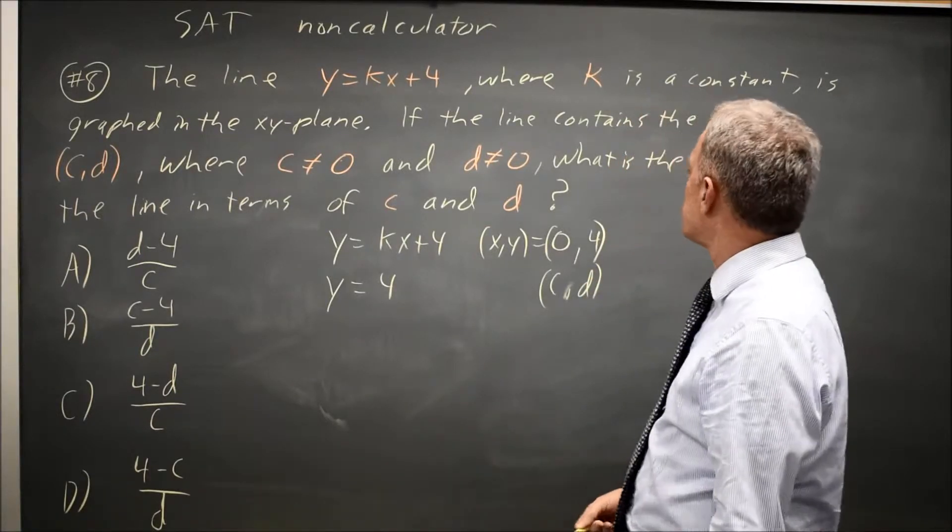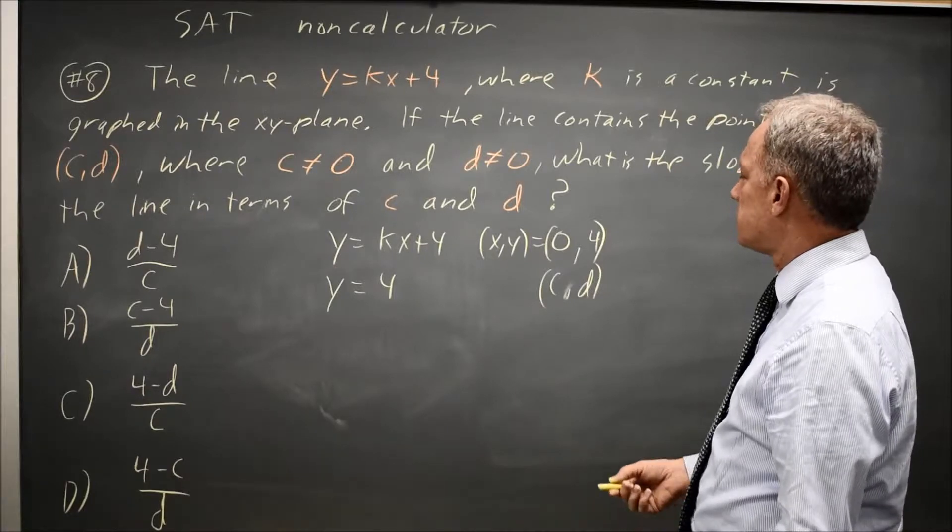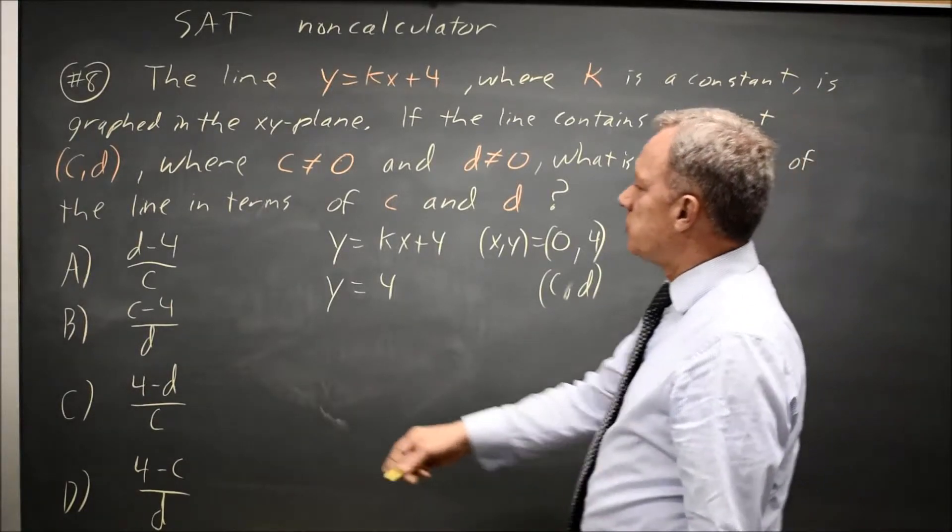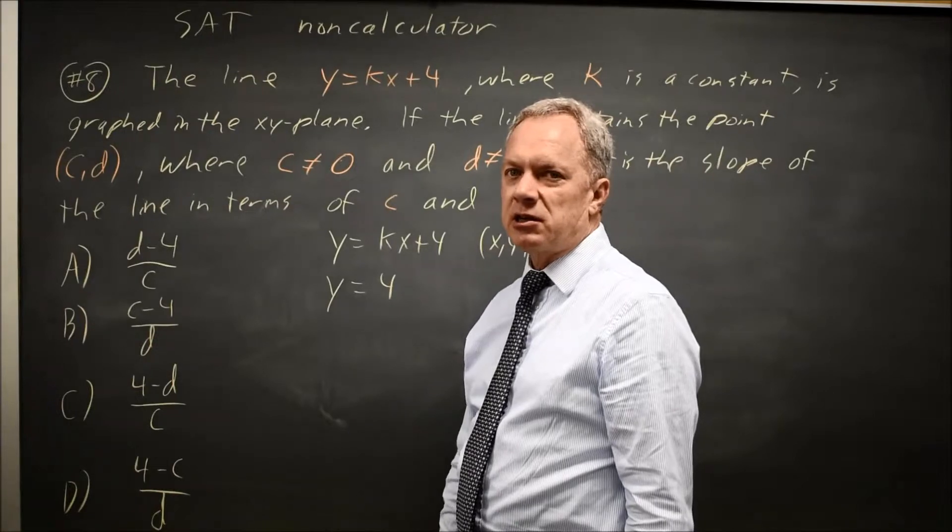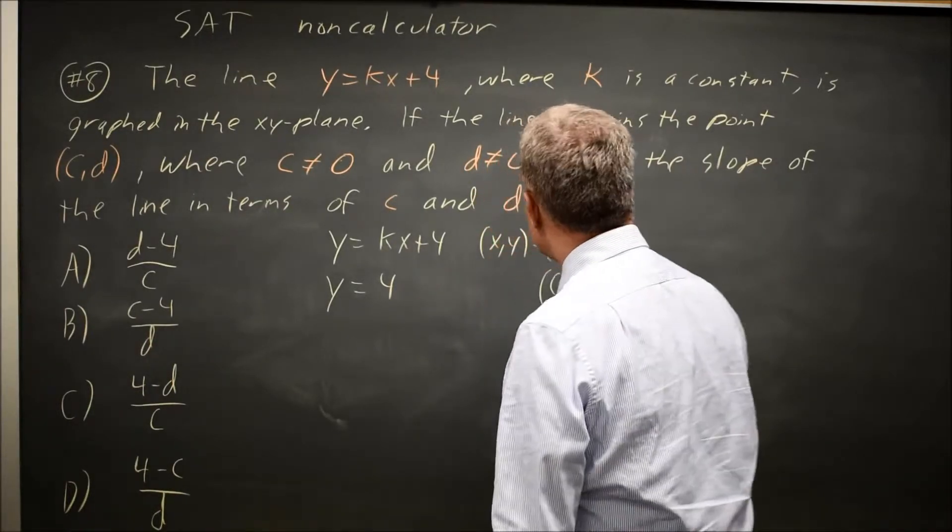With two points, we can find the slope, and they are asking for the slope. I notice none of the answers include k, so I chose x equals 0 so that my formula would not include k.